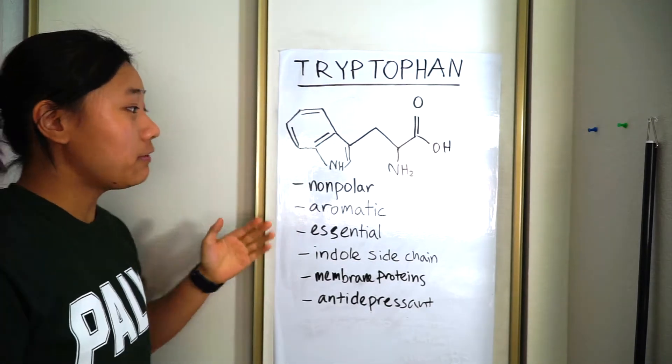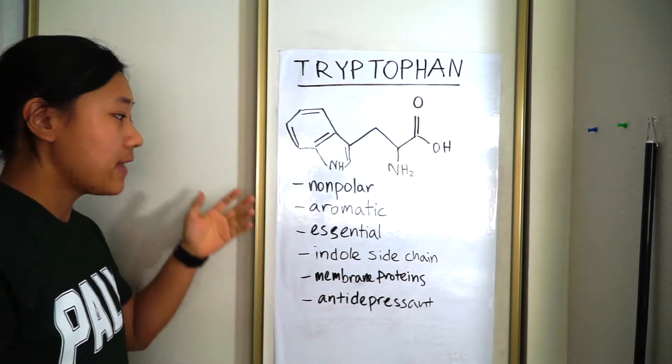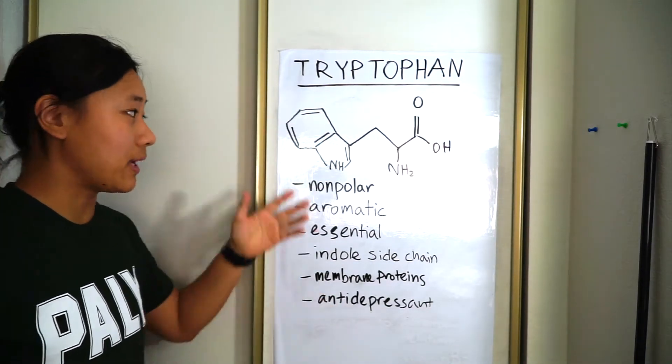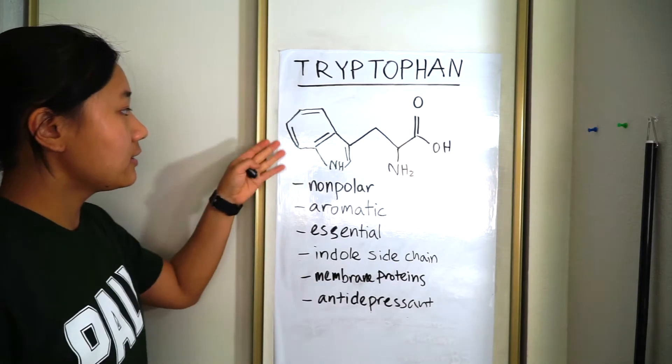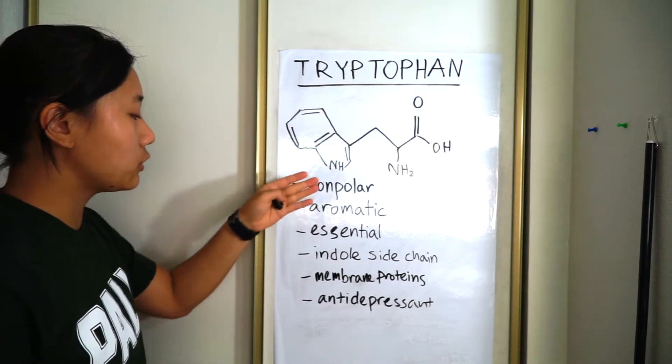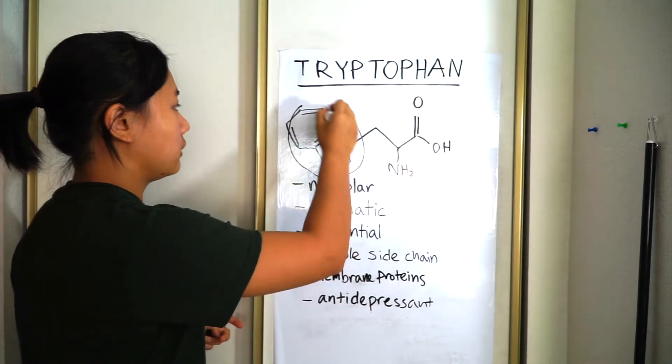So tryptophan. Tryptophan is non-polar, it's hydrophobic, and it's aromatic because it's got these rings. This side chain is composed of two rings and it's called an indole.